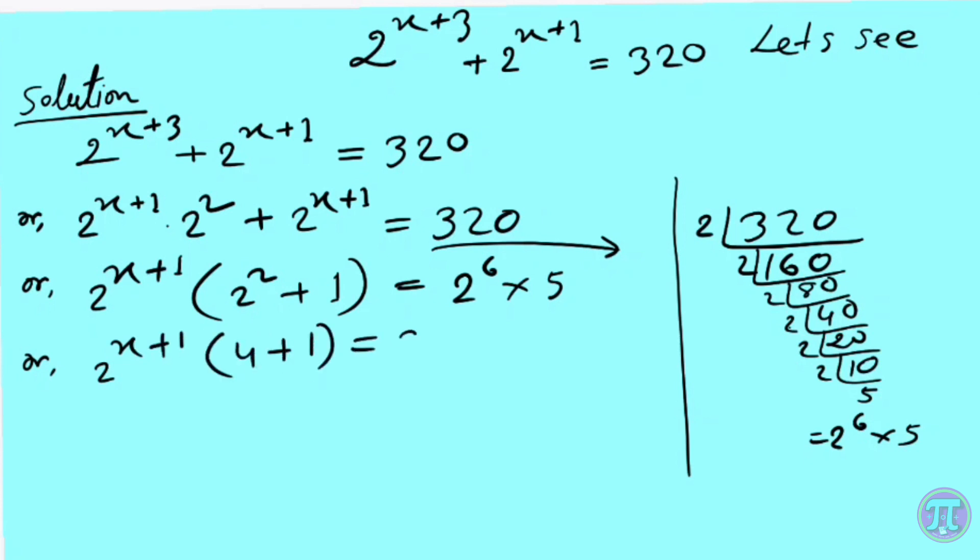Here, 4 + 1 = 5, so 2^(x+1) × 5 = 2^6 × 5.